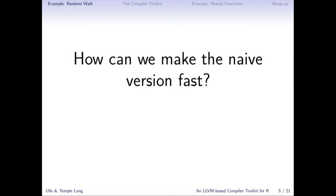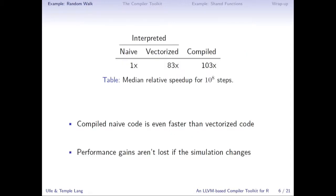So the question is: how can we make the naive version fast? Because we'd really like to write the naive version, not the vectorized version. The answer is to compile the code — we bypass the R interpreter and translate R code directly into machine instructions. We tested this, and the vectorized version running in the interpreter is about 83 times faster than the naive version in the interpreter. If you compile the naive version and translate to native hardware instructions, it's about 103 times faster. So we can do at least as well as the vectorized version, and in fact a little bit better.